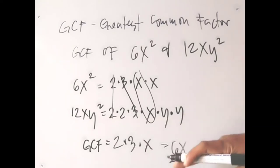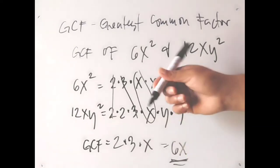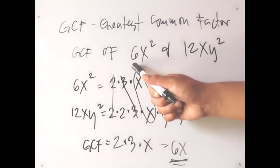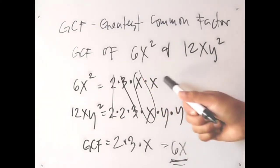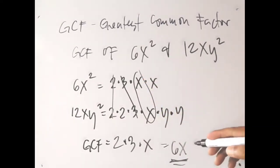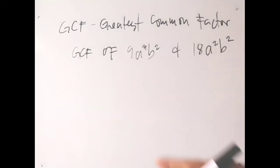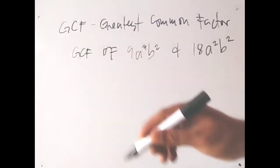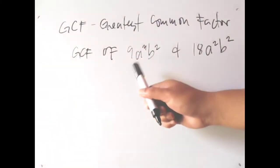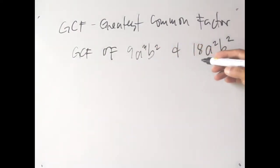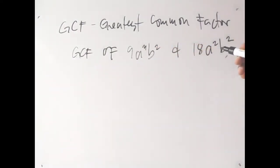Therefore, the only polynomial that can divide both 6x² and 12xy² is 6x. That is our GCF. Let's have another example.